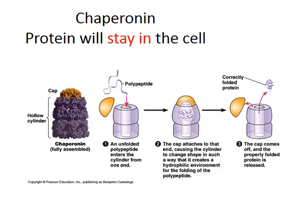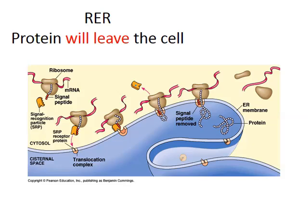Lastly, did the protein require a chaperone or a rough endoplasmic reticulum to fold into its proper shape? If proteins need these things, they have to be available. If a chaperone isn't available, the protein may not be fully formed and would just remain as a polypeptide sequence. That's another way our bodies regulate protein synthesis — by the availability of chaperones. The rough endoplasmic reticulum, or RER, can also regulate where proteins go, since it only works with proteins that are leaving the cell.